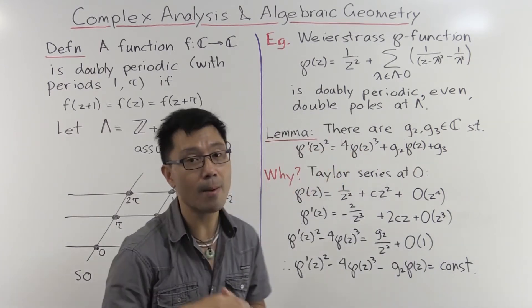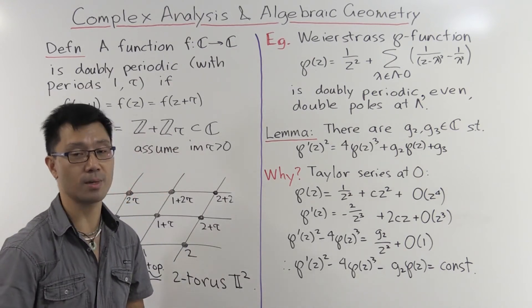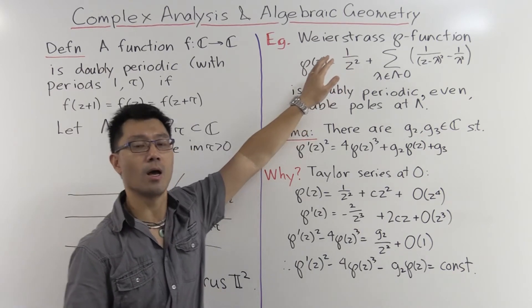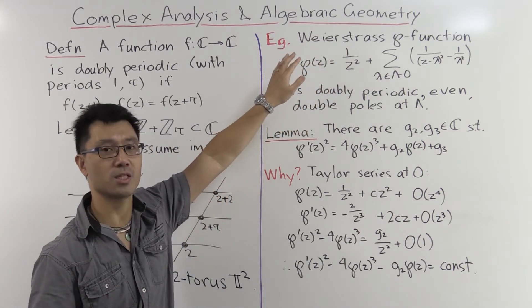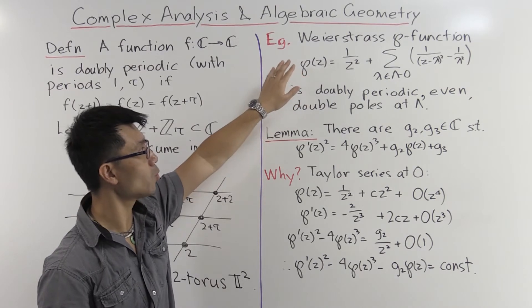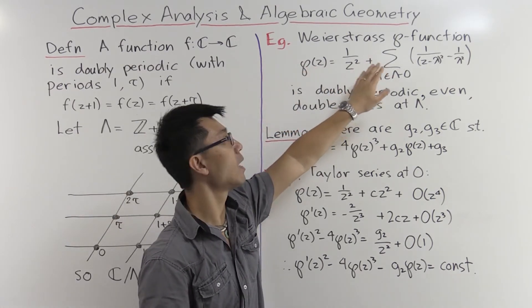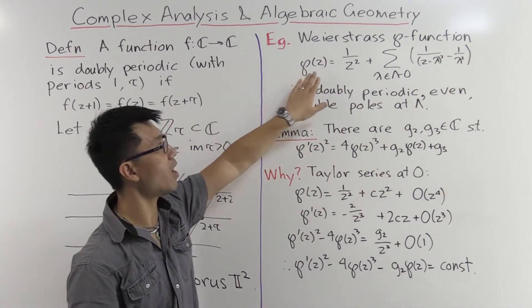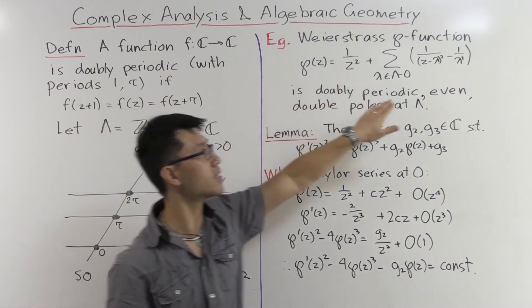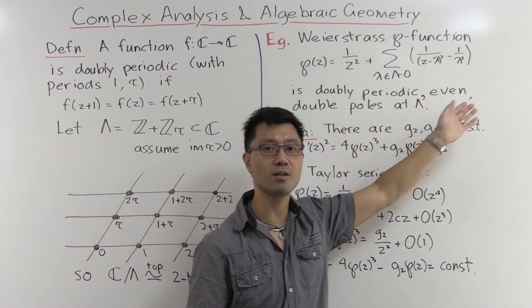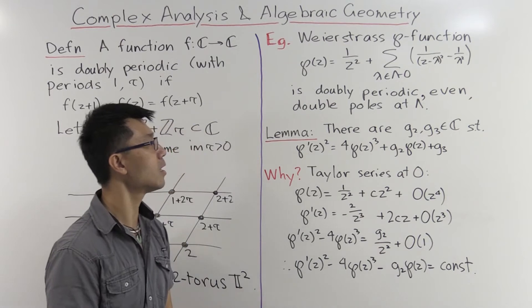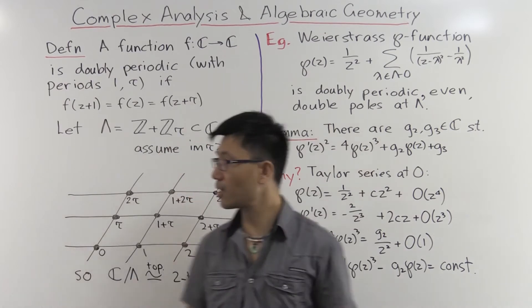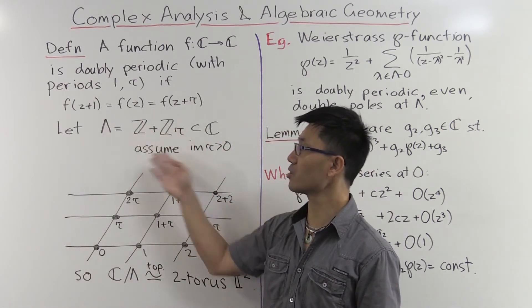So let's try to come up with some examples of these doubly periodic functions. And the most famous one is due to Weierstrass, a German mathematician from the 19th century who worked a lot in analysis. And this goes by the name of the ℘ function, and it's defined as follows. ℘(z) is given by this expansion here, this infinite sum. And the most important thing is that it's doubly periodic, and the periods are given by 1 and τ in this notation here.